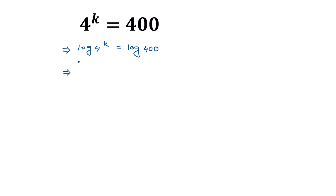Applying the formula log a to the power b is equal to b times log a, we can write the left side as k times log of 4. So k times log of 4 is equal to log of 400, and 400 can be written as 16 times 25.